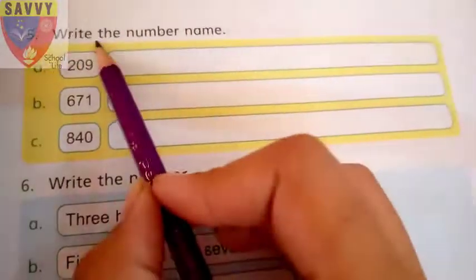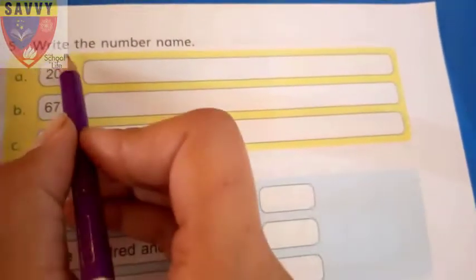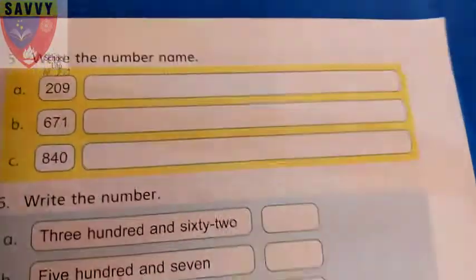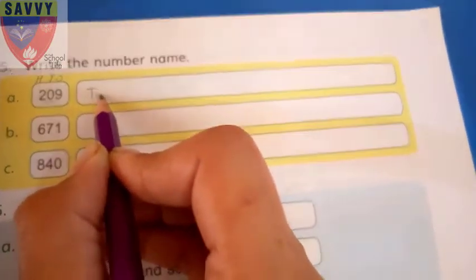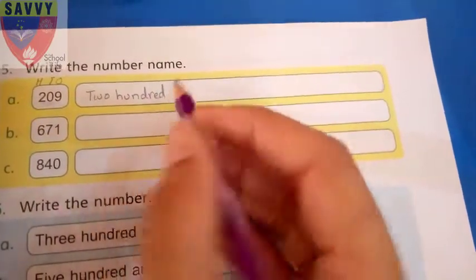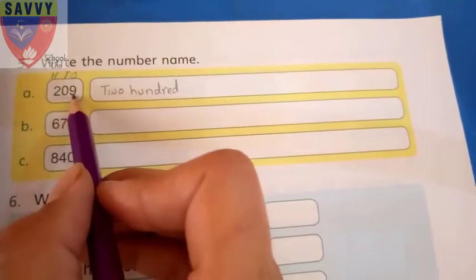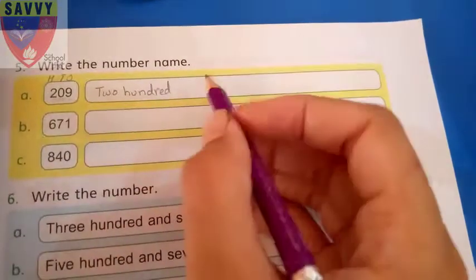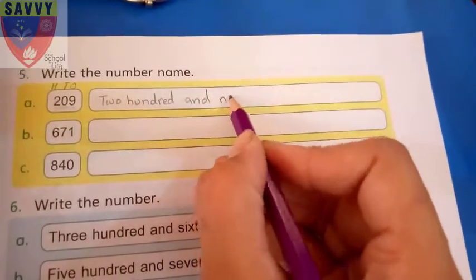Our next question: write the number name. We write ones, tens, and hundreds. How many hundreds? Two hundred. How many tens? Zero. How many ones? Nine. So the number name is two hundred and nine.